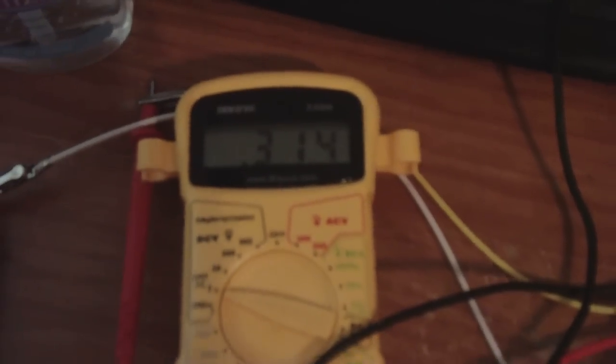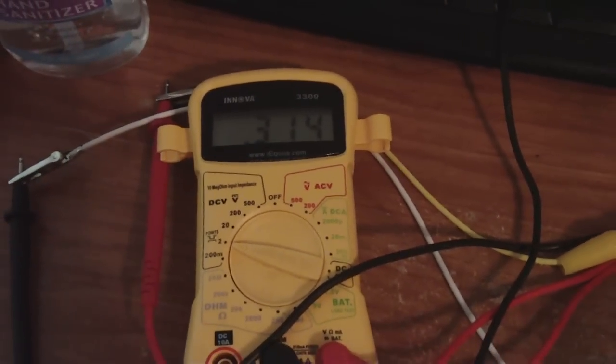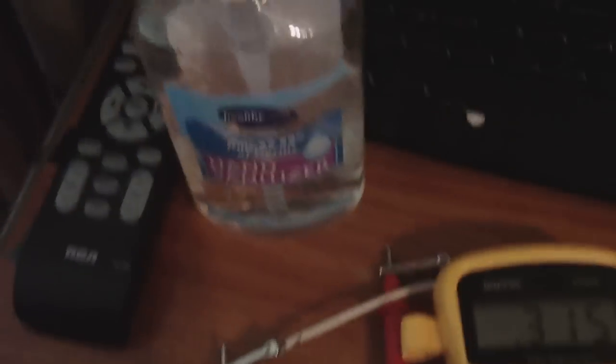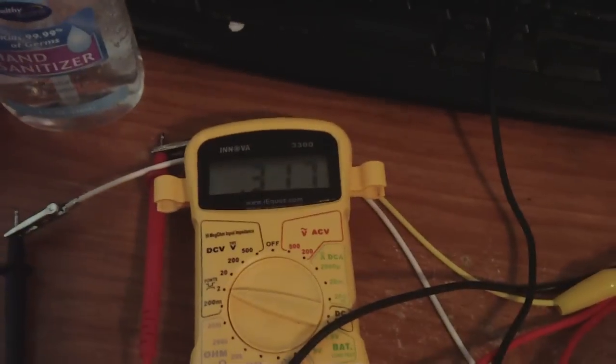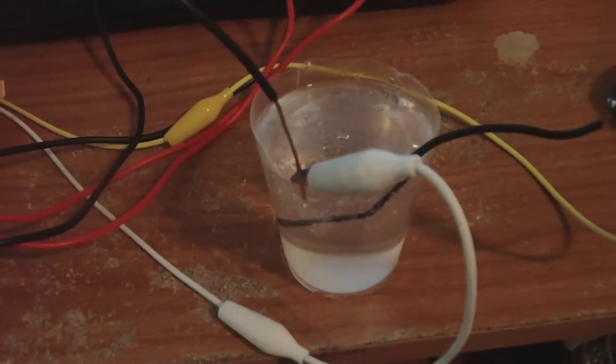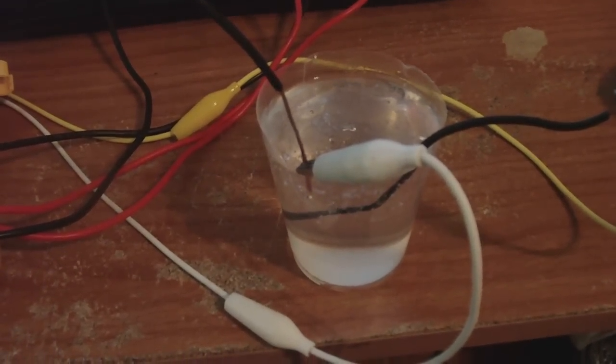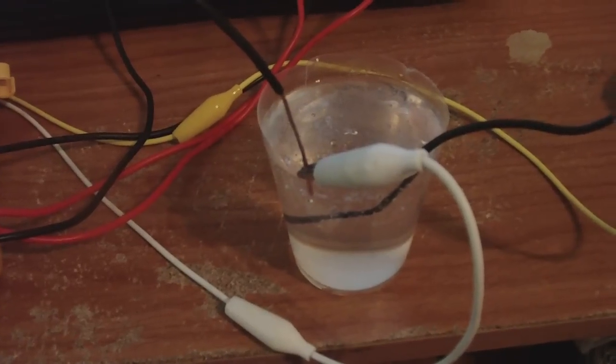But what's interesting is that when I had the water and then I put the hand sanitizer on top of the water, I couldn't get any voltage. I mean I could get like 30 millivolts but that's it. But it would go down over time and it just didn't work.